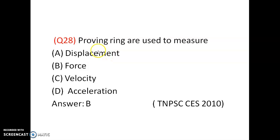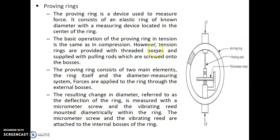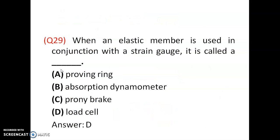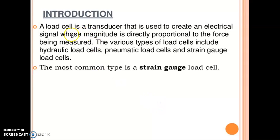Proving rings are used to measure force — not displacement, velocity, or acceleration. It is a perfect elastic ring. When a load is applied, the ring changes its shape. A dial gauge indicator placed in the proving ring measures the deflection, which is directly converted into force. When an elastic member is used in conjunction with a strain gauge, it is called a load cell. Load cells are used with strain gauges and act as a transducer to create an electrical signal directly proportional to the force produced.